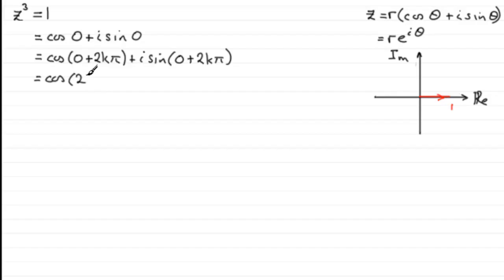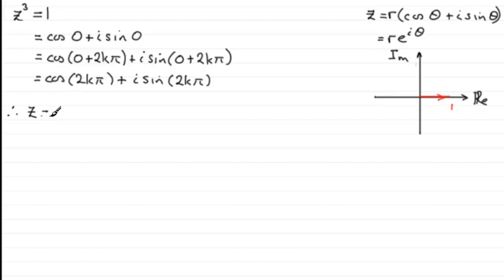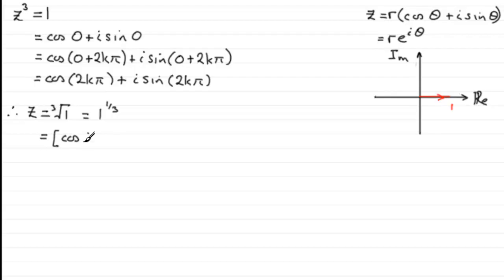Now using De Moivre's theorem, we know z equals the cube root of 1, which is 1 to the power one-third. So we raise the whole expression to the power one-third: [cos(2kπ) + i·sin(2kπ)] all to the power one-third.